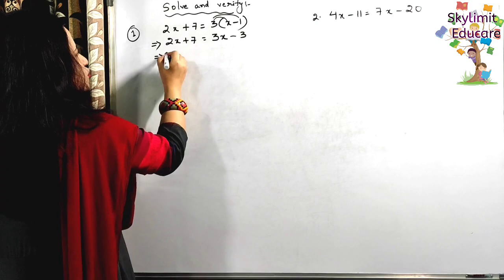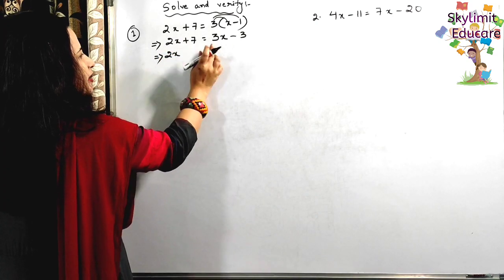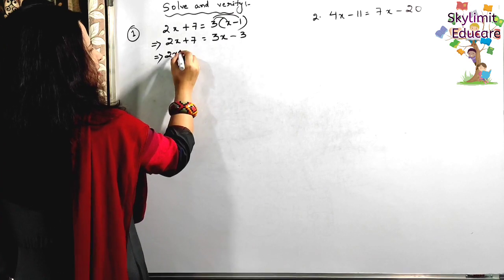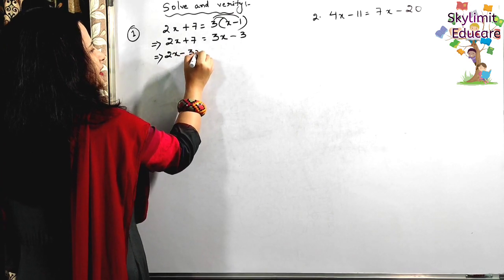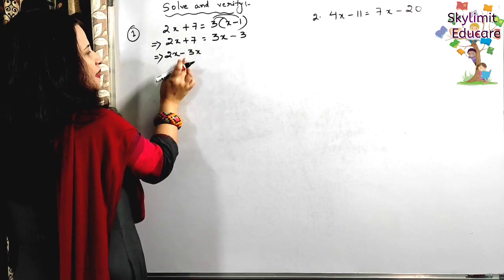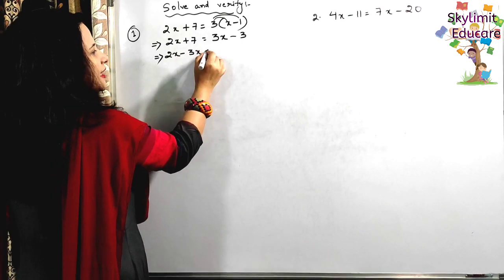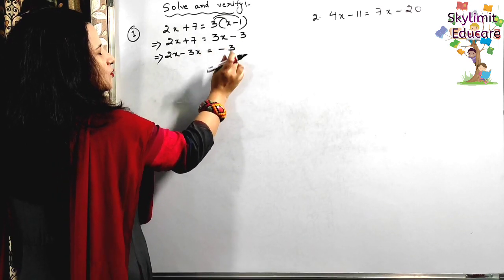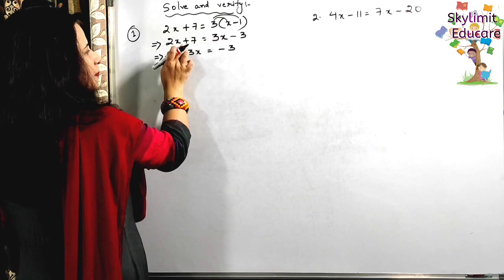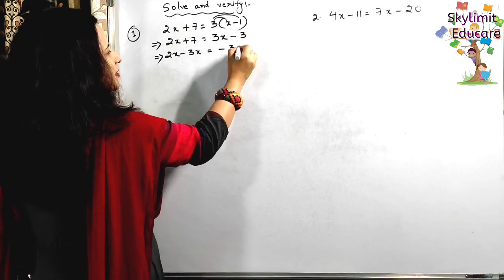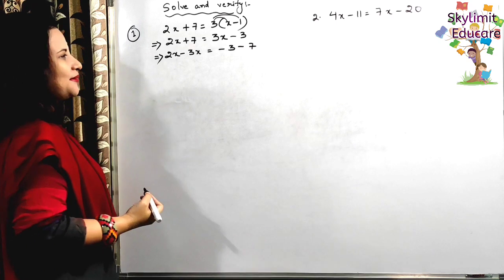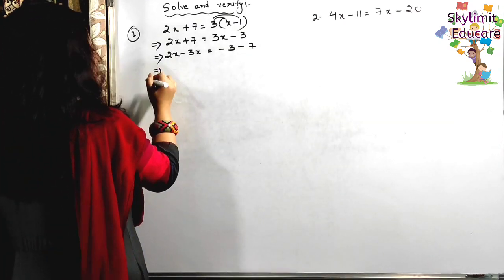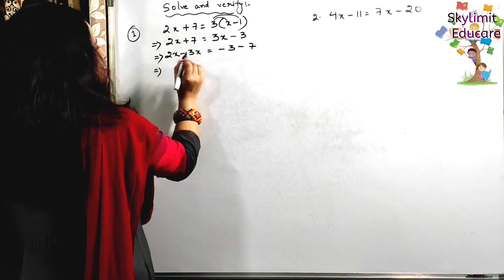Now put the variables on the same side and the constants on the same side. 2x is here; I need to bring 3x from the right side to the left, so it becomes minus 3x. On the right side, minus 3 is left. Now plus 7 shifts to the right side and becomes minus 7.